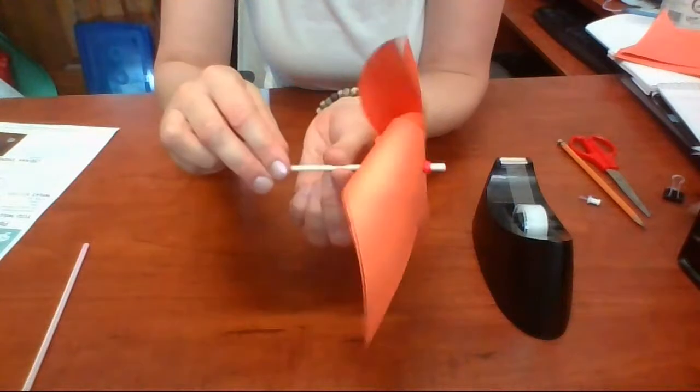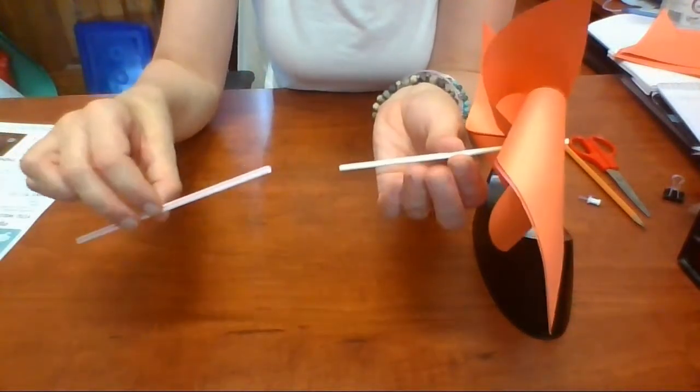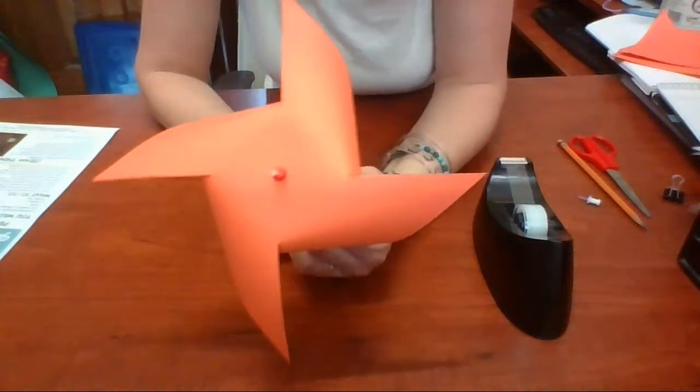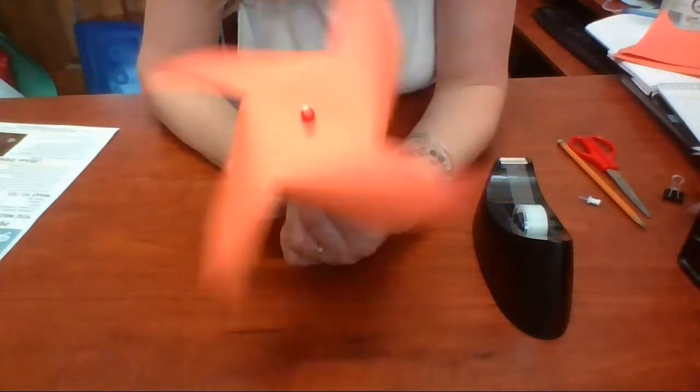Now what you can do if you want to make just a pinwheel is feed your dowel through the straw. And if you hold on to the straw and blow, you have a pinwheel.